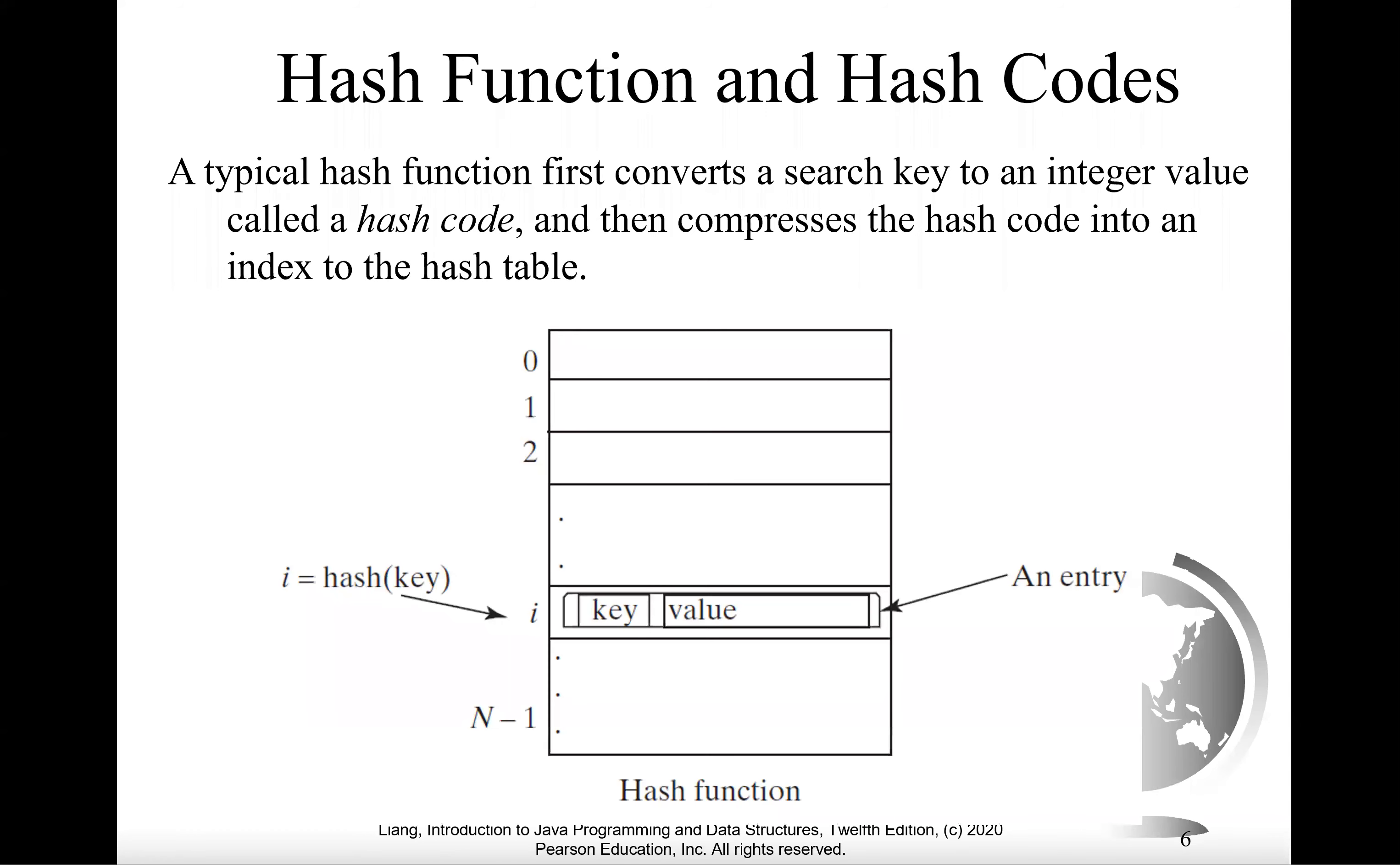Let's look at this diagram. We're going to have this hash function and hash code. In Java, every object has the hash code method that returns an integer value. This value is called a hash code, and this hash code can then be compressed to the hash table.